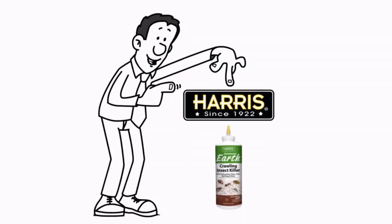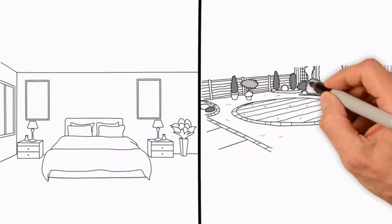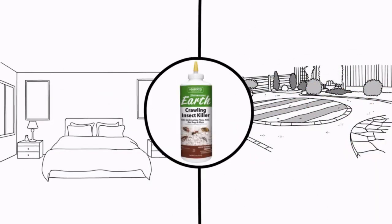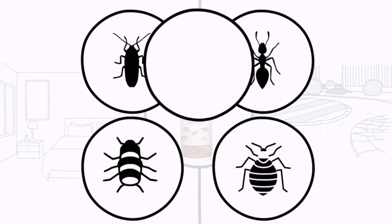How to use Harris Crawling Insect Killer. Our ready-to-use insecticide works for both indoor and outdoor crawling insect control. Kills cockroaches, ants, fleas, bedbugs, grasshoppers, and more.